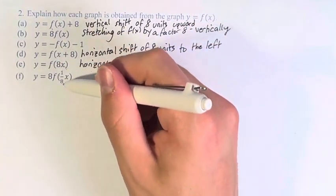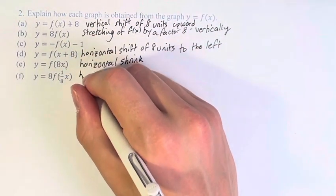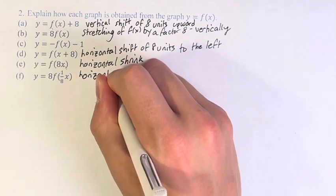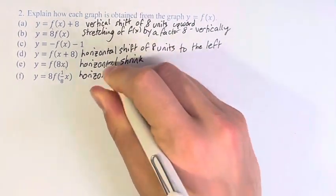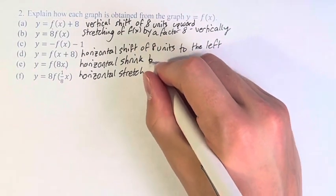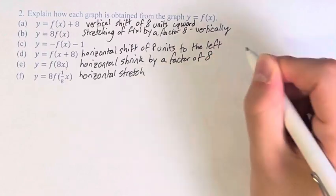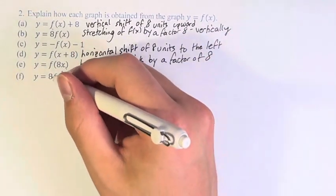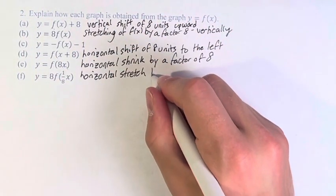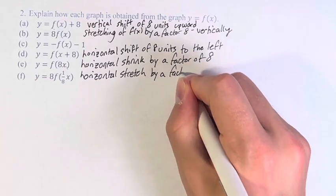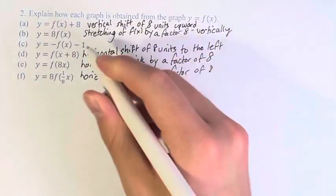Versus here, one-eighth. This is a horizontal shrink by a factor of 8. This is a horizontal stretch by a factor of 8 because it is 1 over 8.